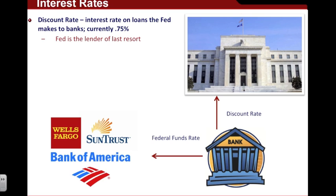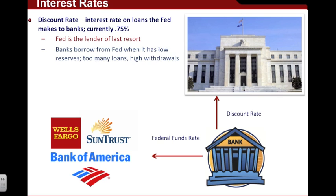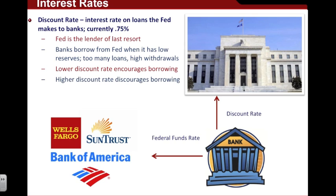We say that the Fed is the lender of last resort, meaning banks go to the Fed if they simply cannot get loans from other banks and they lack liquidity. A typical scenario would be that banks need to borrow from the Fed because they have low reserves and high withdrawals. If the Fed wants to encourage the economy to grow, they can lower the rates at which member banks borrow — they can lower the discount rate. A lower discount rate encourages borrowing, while a higher discount rate discourages borrowing.